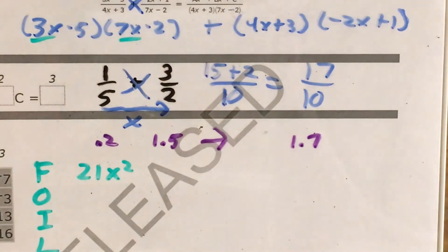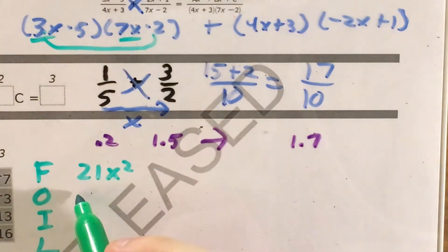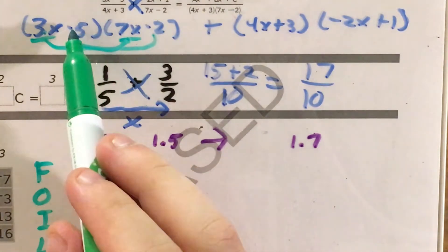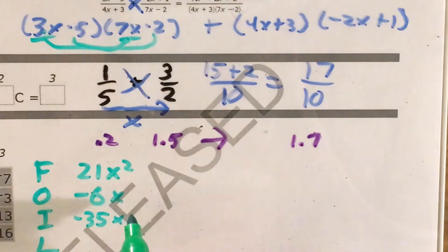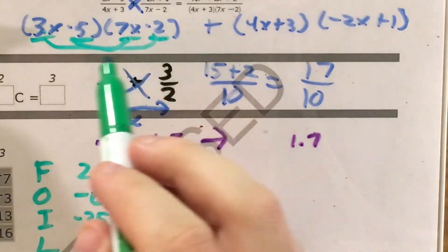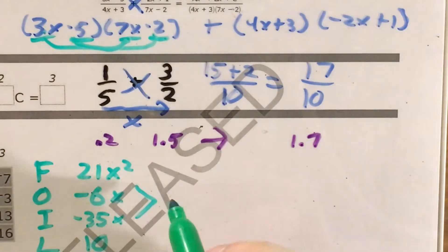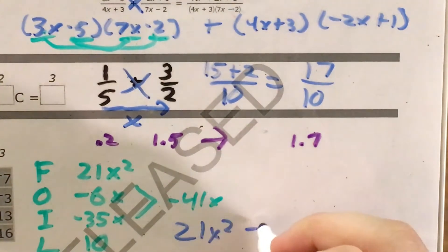Now for outside, I'm doing 3x times negative 2, which gives me 3 times negative 2 is negative 6x. For inside, I do negative 5 times 7x. Negative 5 times 7 is negative 35, and that's x. And finally, L means last, so I multiply negative 5 by negative 2, and I get positive 10. All I have to do is combine my like terms, negative 6 minus 35 is negative 41x, which means that my equivalent expression to 3x minus 5 times 7x minus 2 is going to be 21x squared minus 41x plus 10.